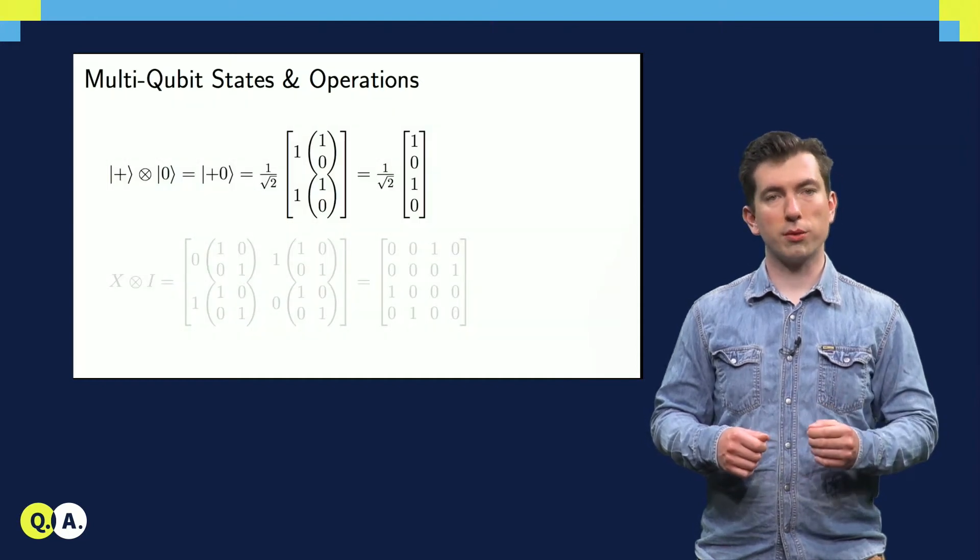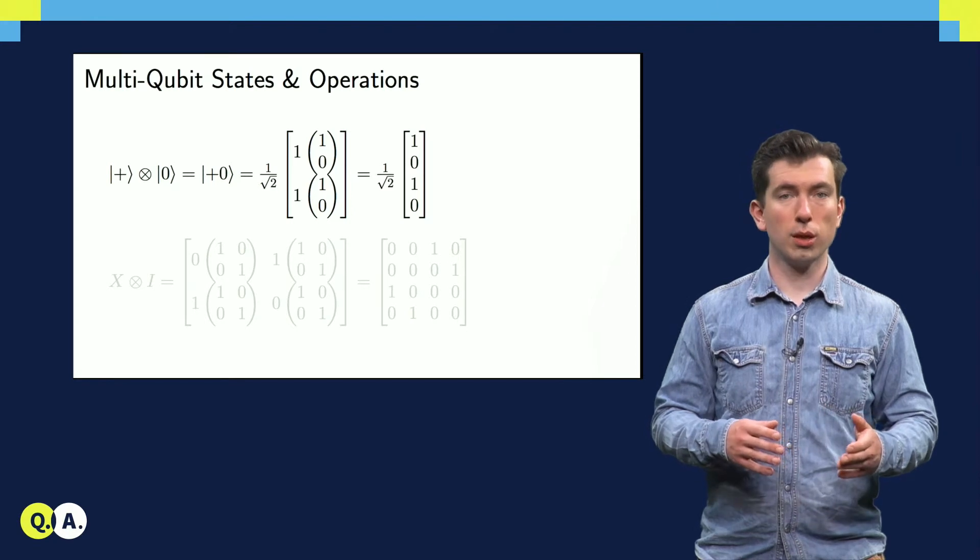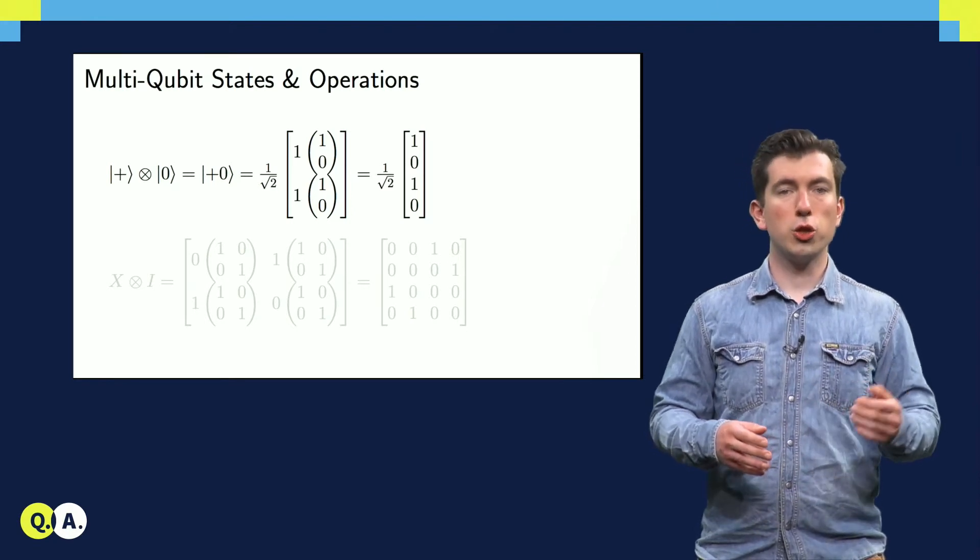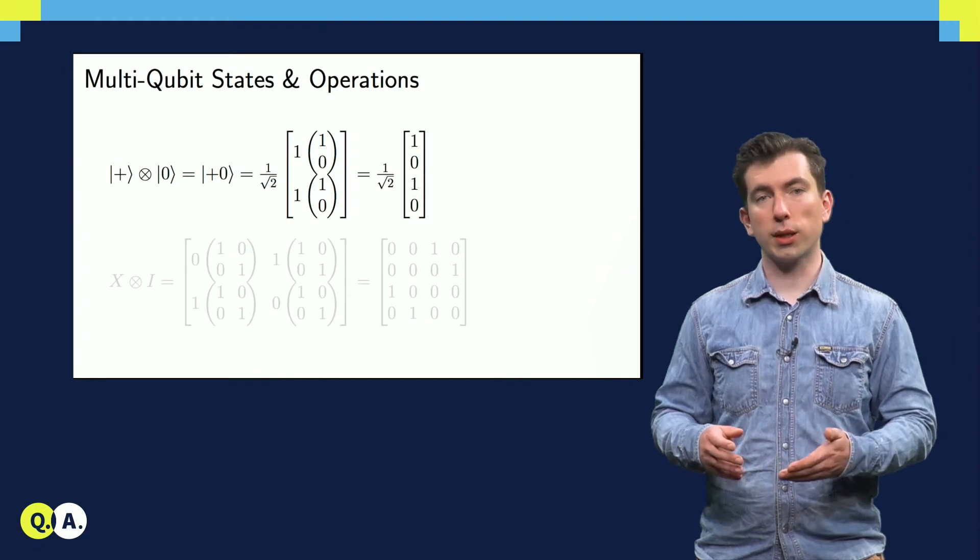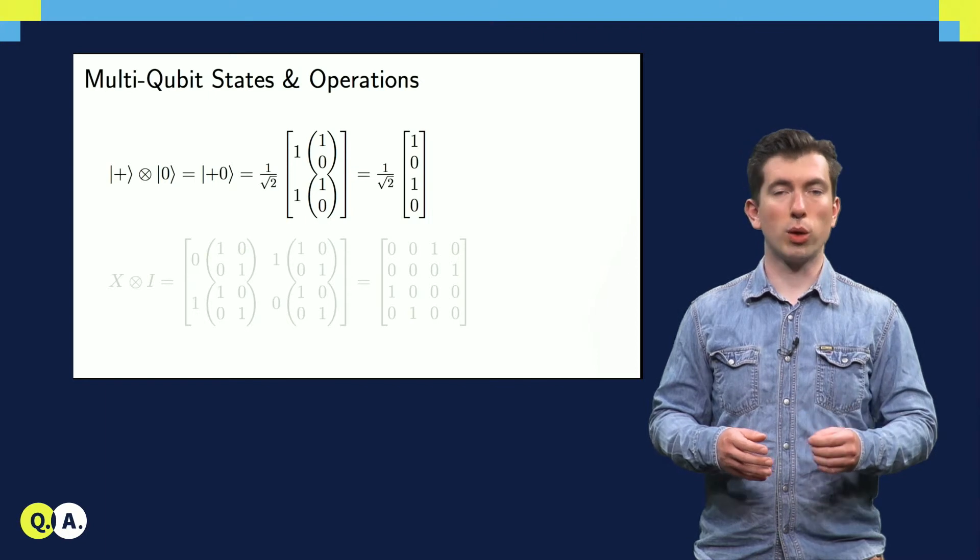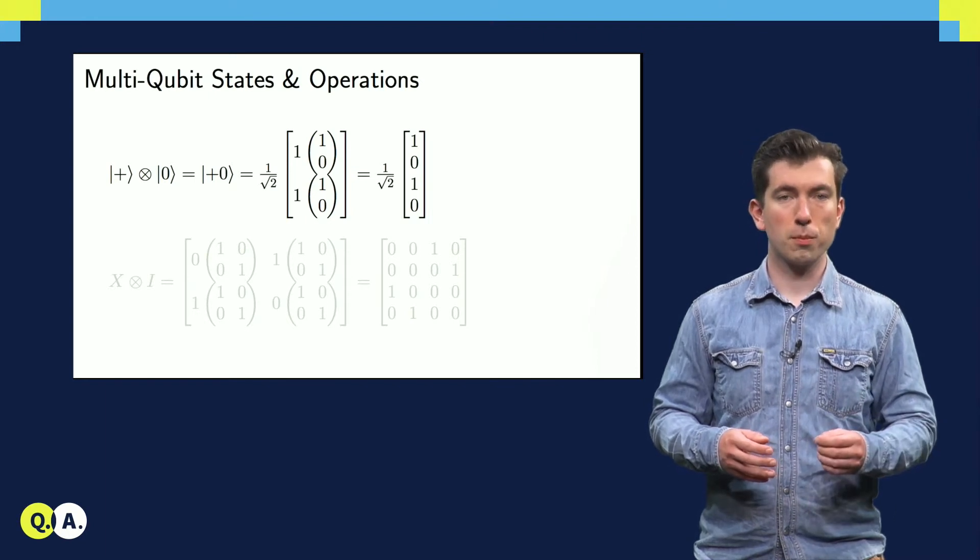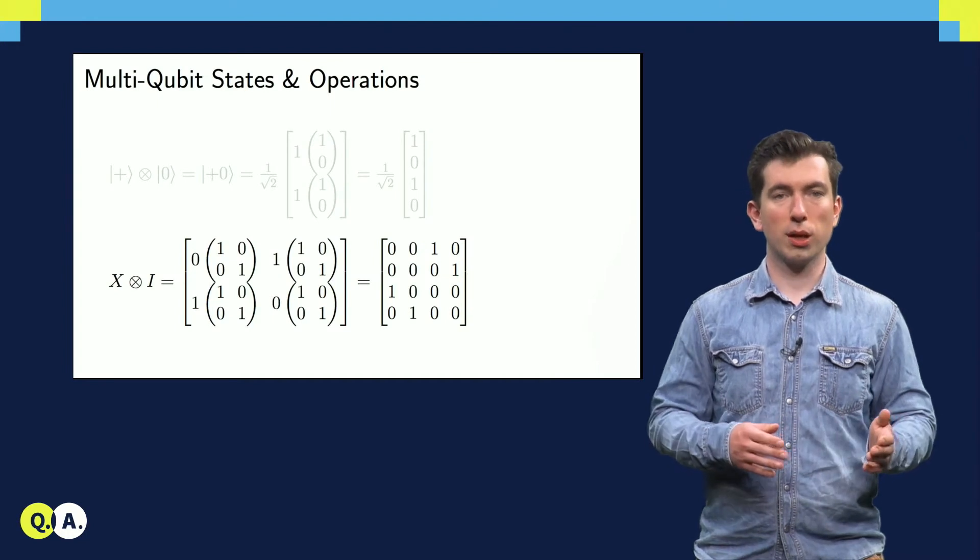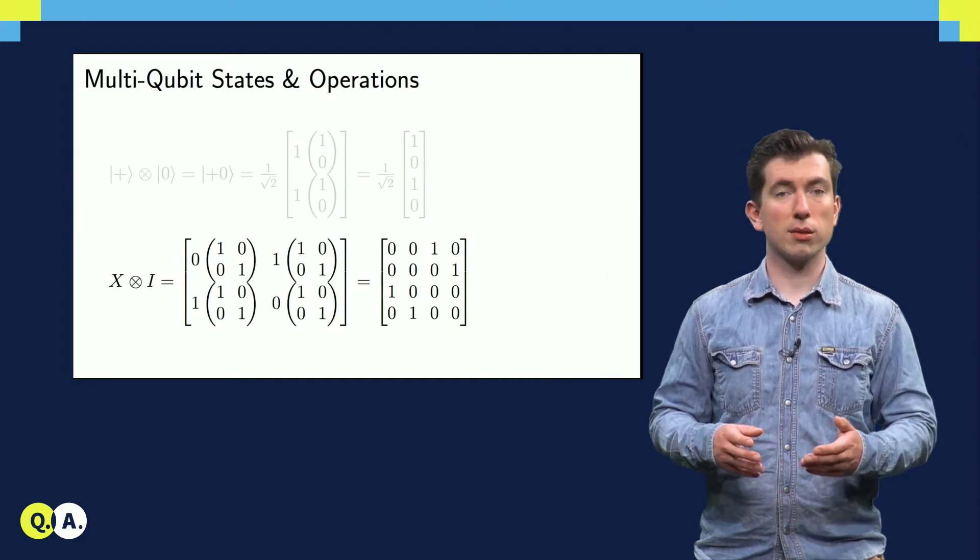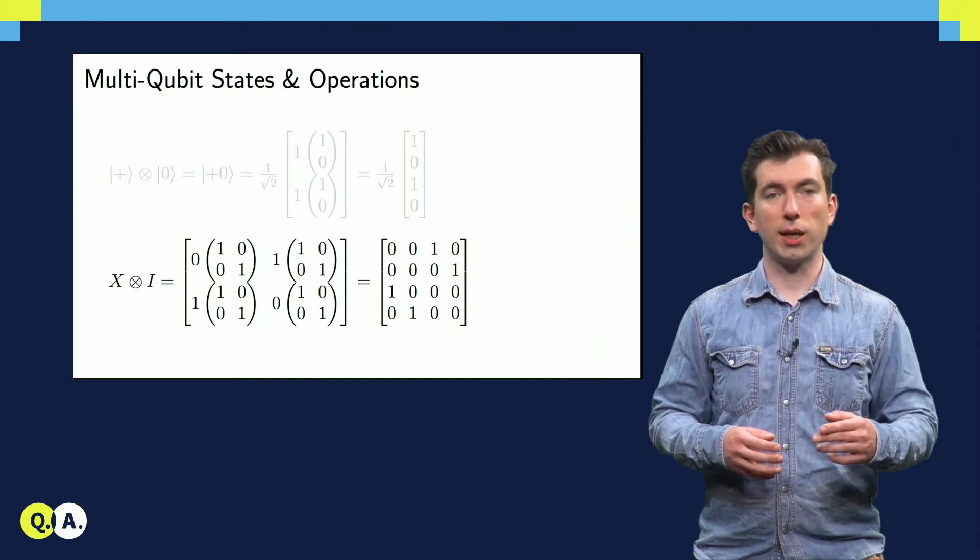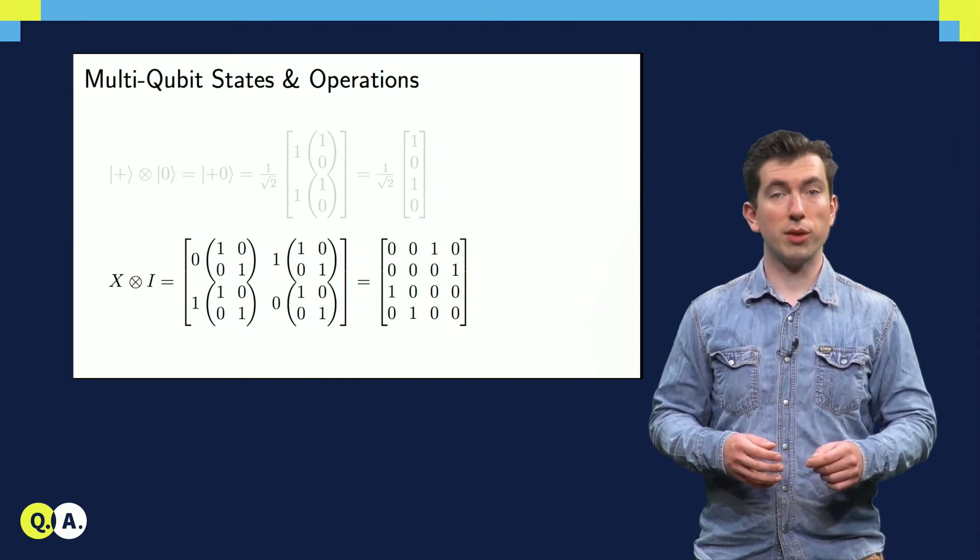Here, we see the tensor product of two states, plus and zero, resulting in a state which we often call plus zero. Each two-by-one block of the state vector we're calculating is proportional to the vector for the zero state, and it's multiplied by one of the elements of the plus state. We can also take tensor products of operations and observables. Here, we take the tensor product of x and the identity, making a block matrix whose blocks are all equal to the identity multiplied by one of the elements of x.